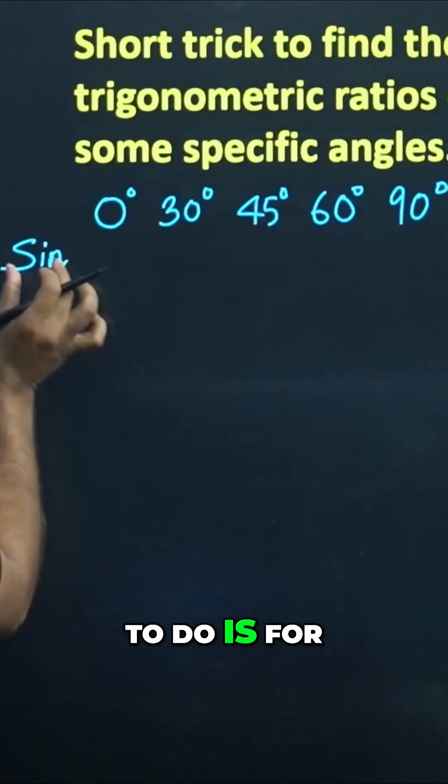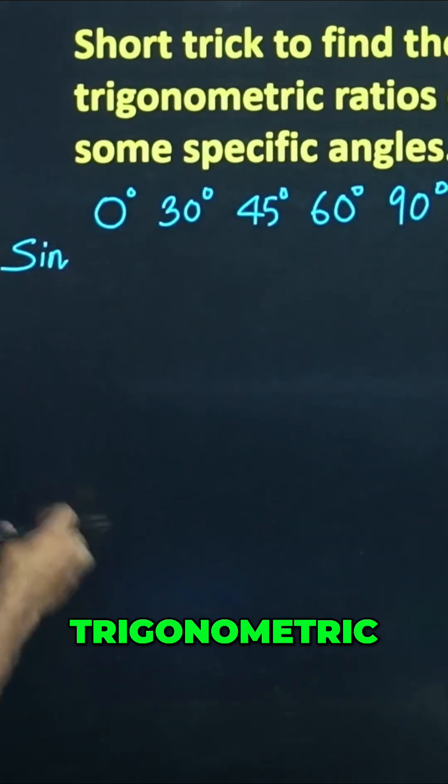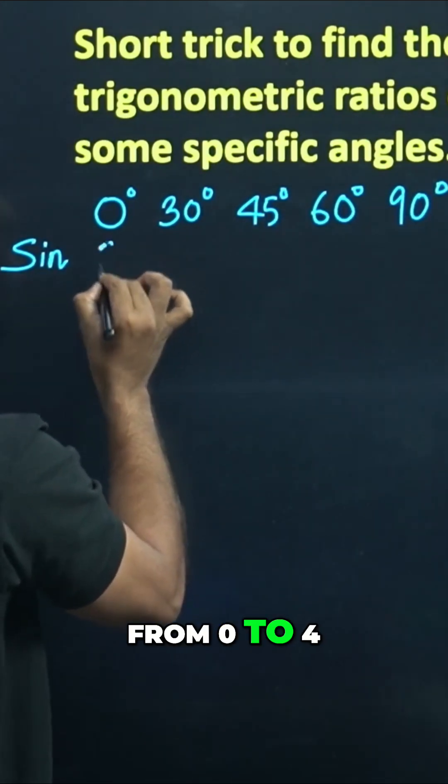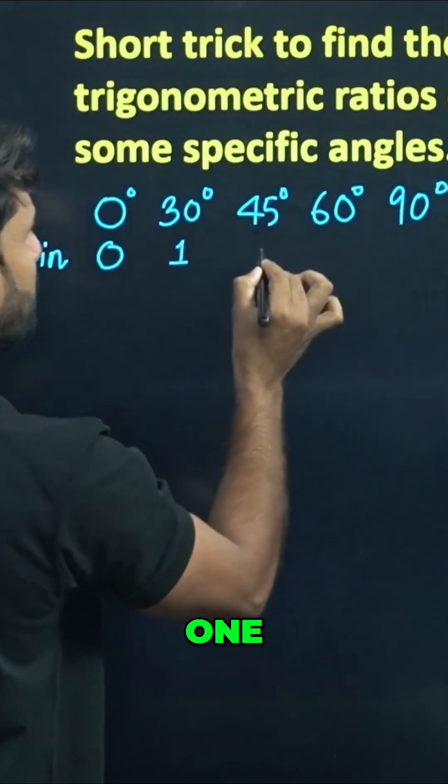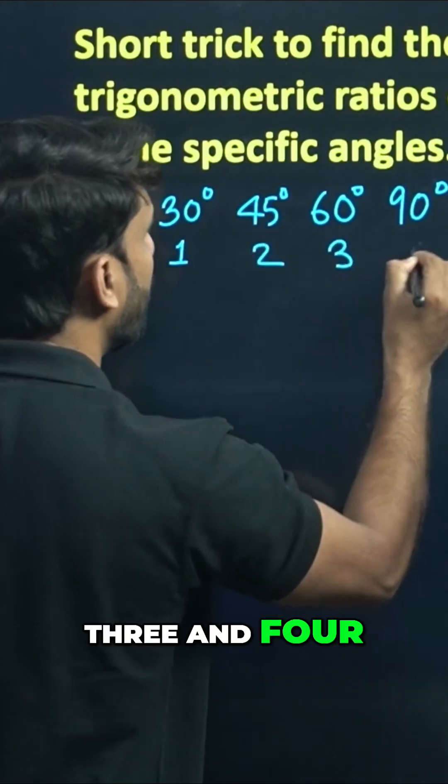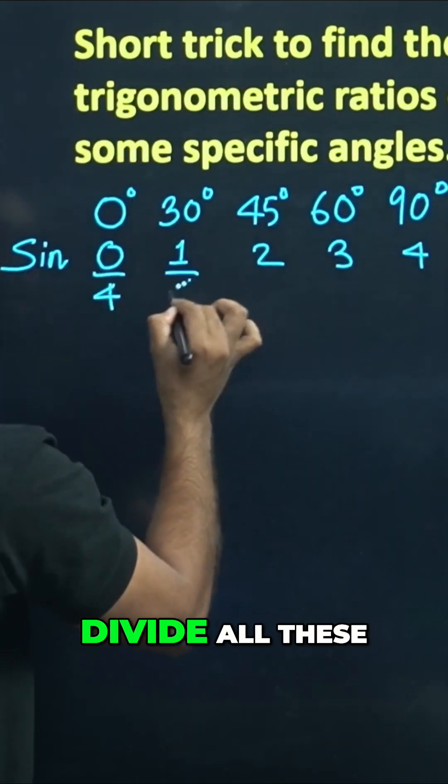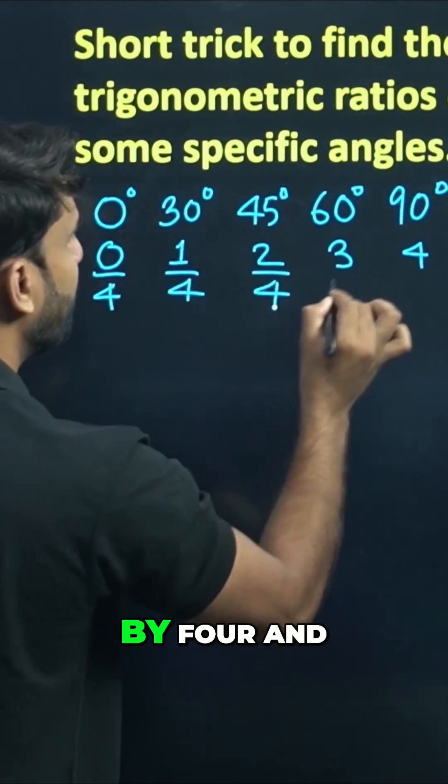What you need to do to find the trigonometric ratio of sine is write down the counting from 0 to 4 here: 0, 1, 2, 3, and 4. Divide all these numbers by 4.